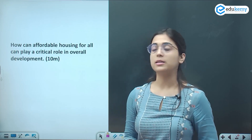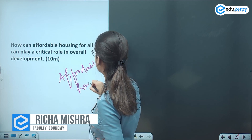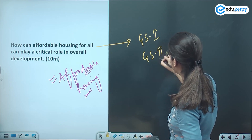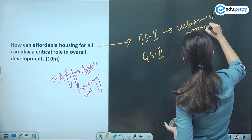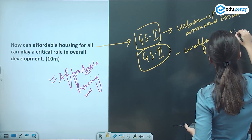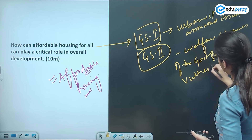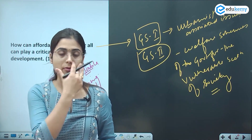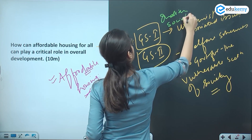Today we are going to start our discussion on the question topic: affordable housing. This question can be placed under GS Paper 1 under urbanization and associated issues, as well as GS Paper 2 under welfare schemes for the vulnerable sections of society. So this question could be part of both GS Paper 1 and GS Paper 2 — it falls under Indian society and social justice.